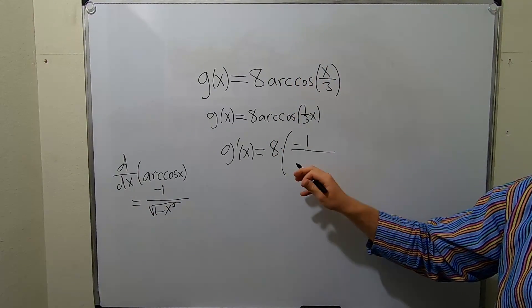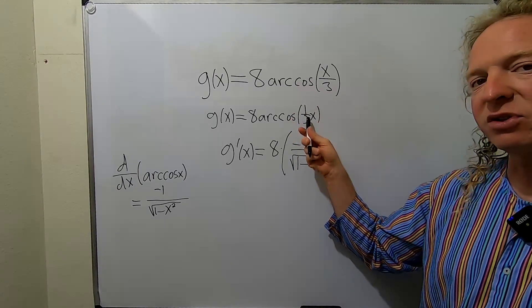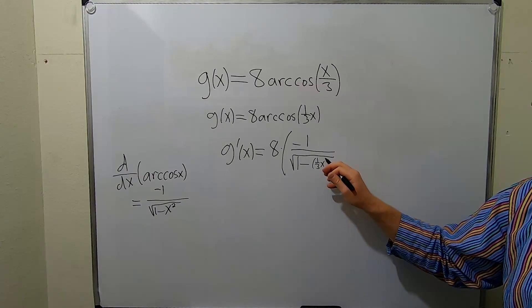Negative 1 over the square root of 1 minus... Then we have this quantity squared. So 1 third x quantity squared.